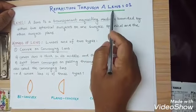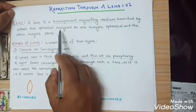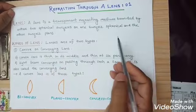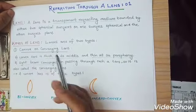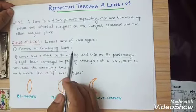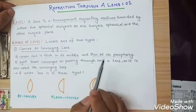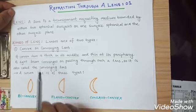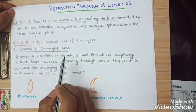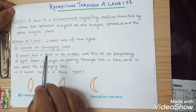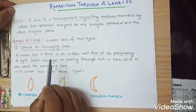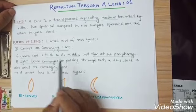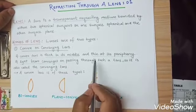So what is a lens? A lens is a transparent refracting medium bounded by either two spherical surfaces, or one surface spherical and the other surface is plain. So mainly there are two types of lens: one is convex lens and the other is concave lens.